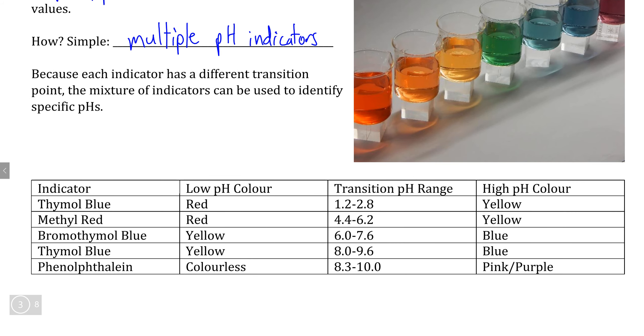So the idea is because each of the indicators that are mixed together in a universal indicator solution have a different transition point, that means that while one indicator might change color in a very strongly acidic solution, the rest of the indicators are completely unaffected. However, as we increase pH, the increase in pH is going to cause different colors of indicator to change, therefore indicating a more specific pH due to the presence of multiple indicators being present.